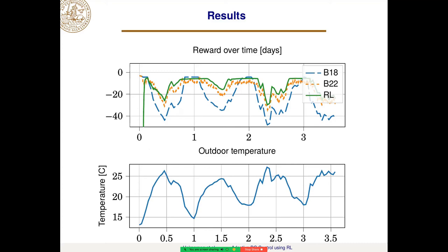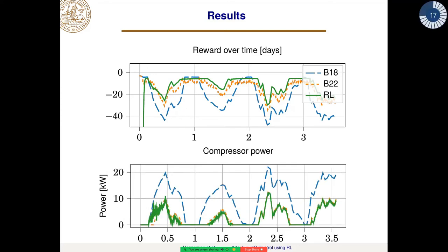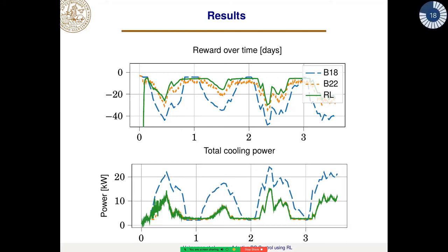The shape of the reward curve comes largely from the outdoor temperature, shown below. When the outdoor temperature is low, we don't need to turn on the compressor and it's very cheap. But as the temperature rises, we need to turn on the compressor by varying amounts depending on the set points within the data center, which costs a lot. The compressor power used follows the same shape, as does the total cooling power — which is compressor power plus a little extra for the fans.